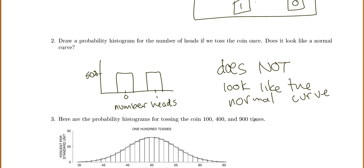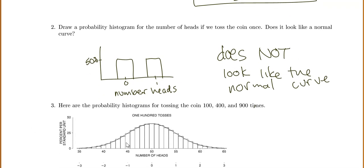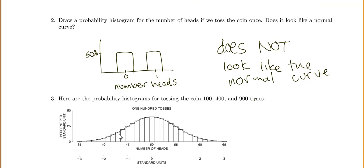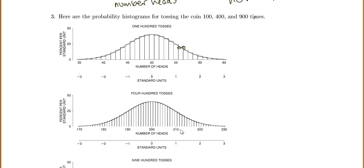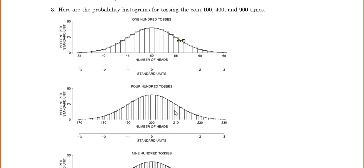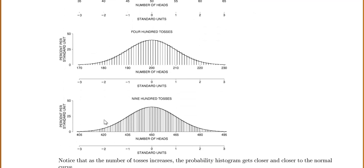Now let's look at what our histogram looks like if we toss it 100 times. The blocks are the actual probability histogram and I've overlaid the normal curve — see how close the histogram is to the normal curve? It's not exact; you have a little too much here, not quite enough there. But it looks pretty close. At 400 tosses, it's harder and harder to tell the difference between the blocks and the actual normal curve. At 900 tosses, the probability histogram — our theoretical chances — gets closer and closer to the normal curve.